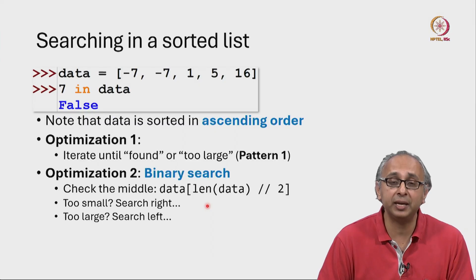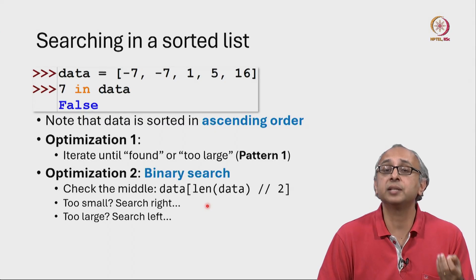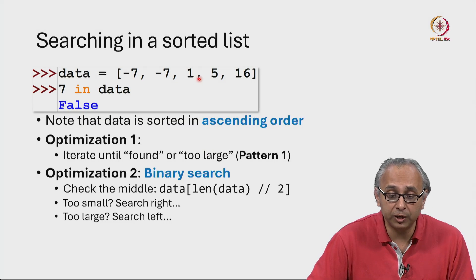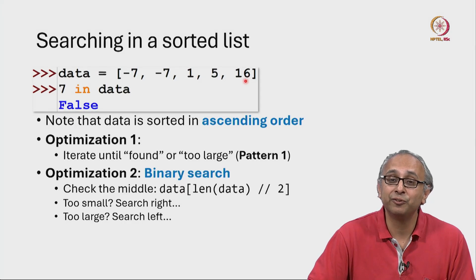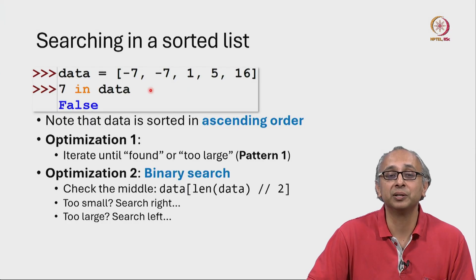If the value we are looking at is too large—let's say we were looking for 0 and we went to the middle and found, oh, this is too large—then there is no point searching for even larger values. We should just focus our attention to the left.